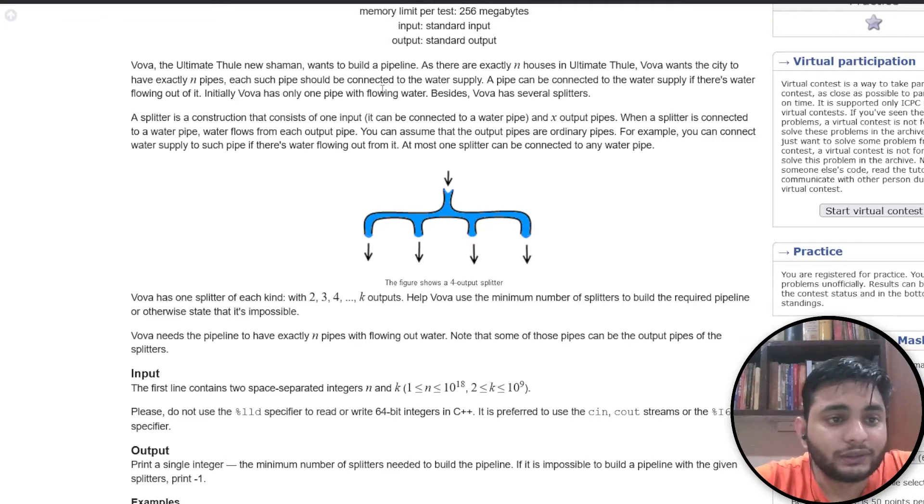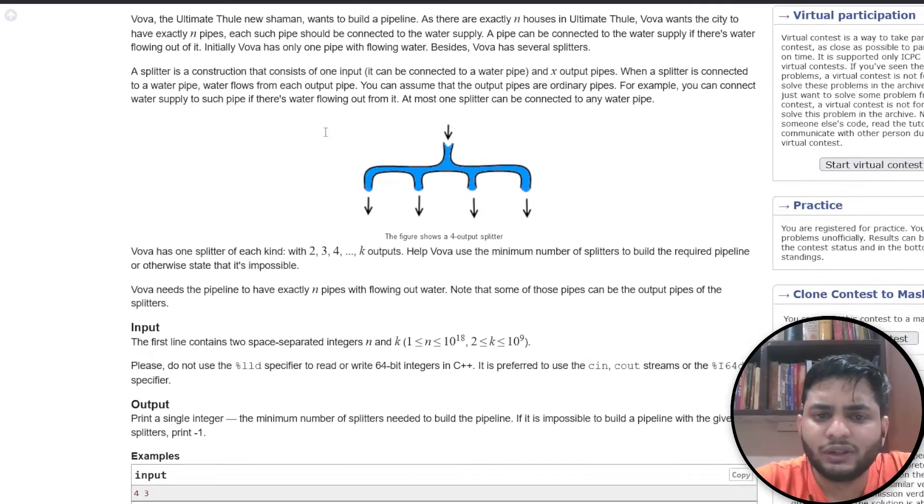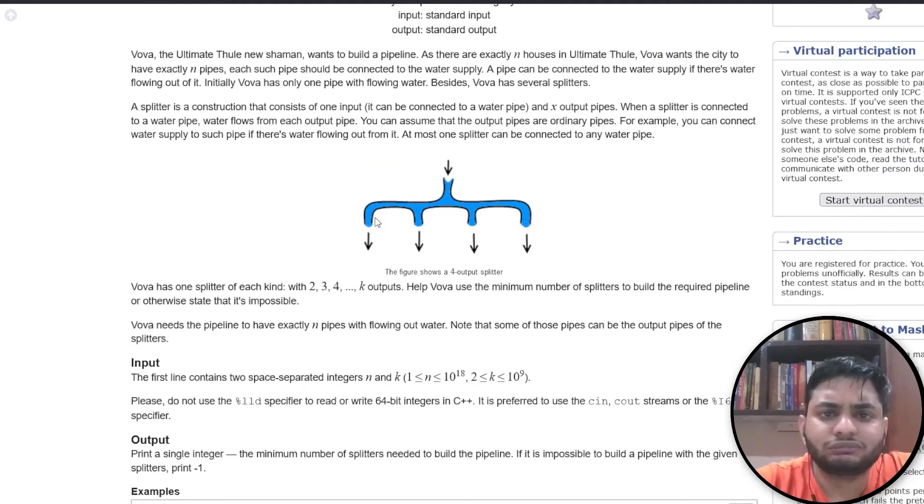The pipeline should be connected to a water supply where a pipe can be connected if there is water flowing. Let's break down the question in simpler words. We have some sort of input and we need a splitter kind of thing which splits water into these number of pipelines.